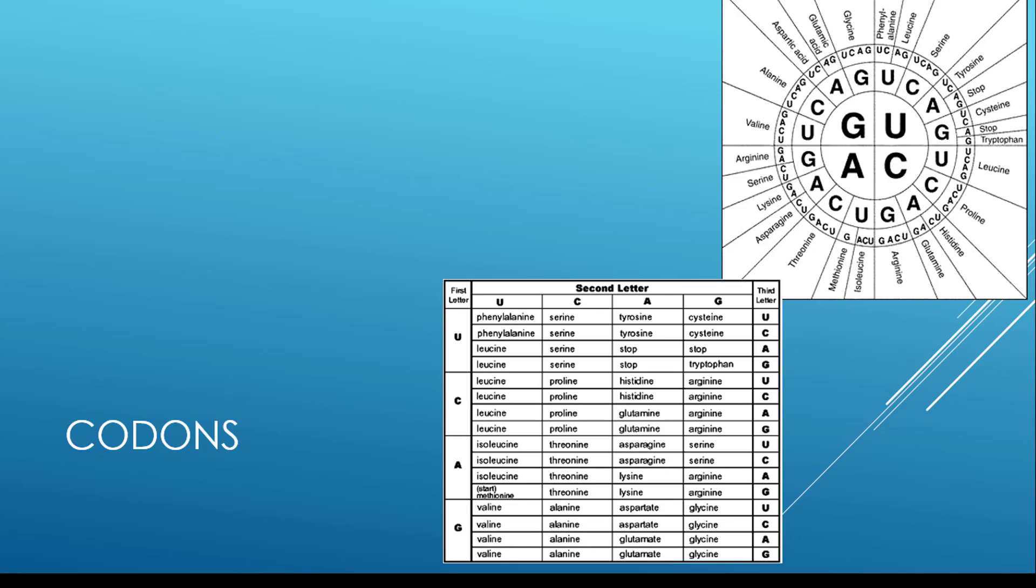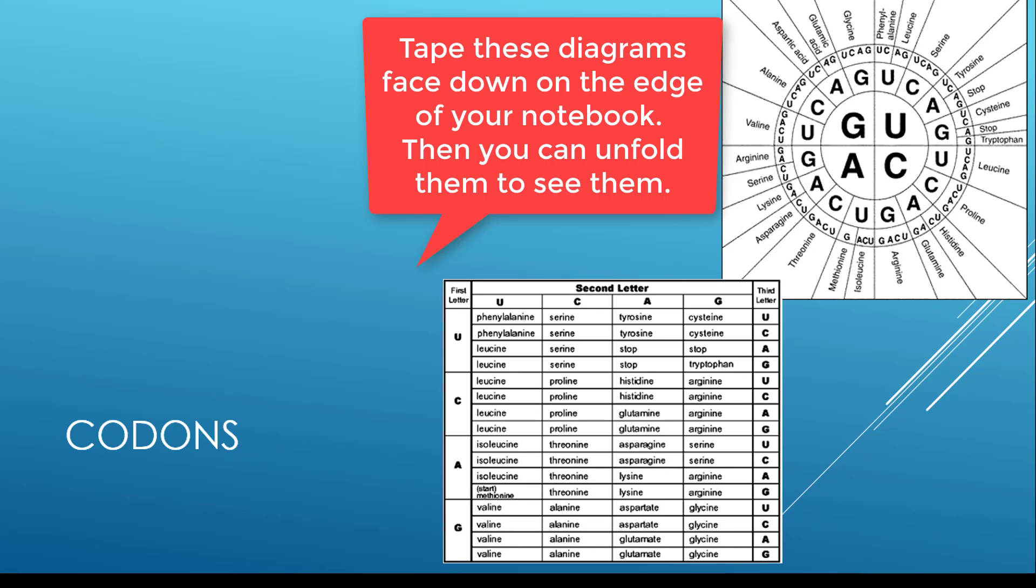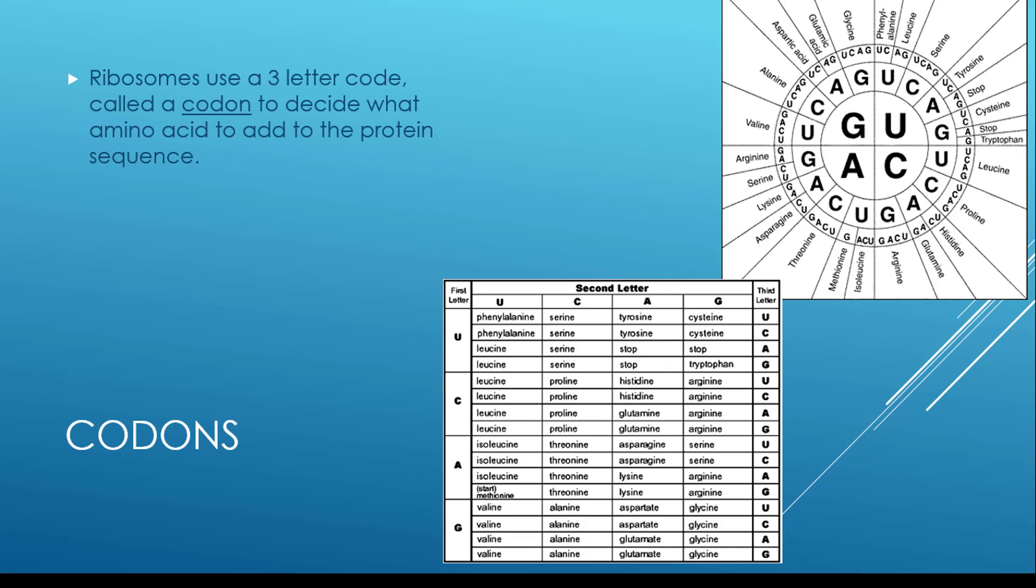Now, how does your body know how to build the protein? That's when you come to what are called codons. Codons are three-letter DNA segments that tell your body which amino acid to use. If you remember, proteins are made of many amino acids put together. Each group of three letters tells your body how to make a particular amino acid. Scientists use a codon chart in order to help you with this, and I'm going to walk you through how to use a codon chart.